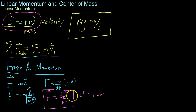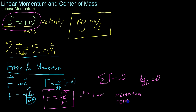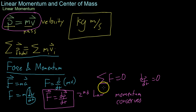If you have the sum of the external forces equal to zero, that means that the change in momentum is also zero, which means that momentum is conserved. In other words, you don't change the total amount of momentum — its magnitude and direction within the system don't change if there's no outside force acting on it.